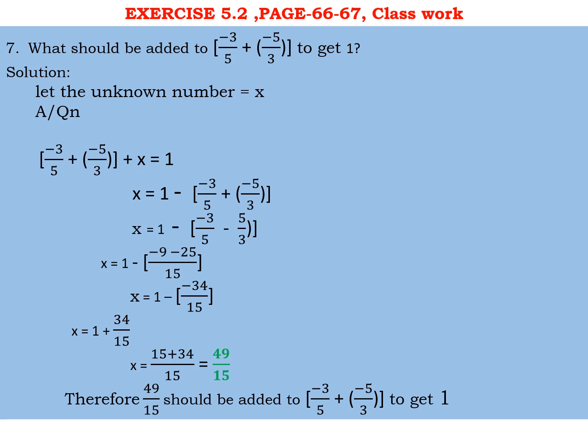Question number 7 of page 67 says: What should be added to minus 3 by 5 plus in the bracket minus 5 by 3 to get 1? If this is one part and this is another part, let the unknown number be x. According to the question, minus 3 by 5 plus minus 5 by 3 in the big bracket plus x should be giving 1.